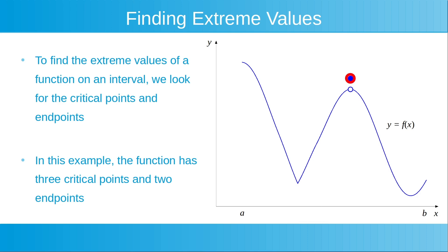The second critical point is now shown highlighted in red. At this point, the derivative of the function is also undefined — the derivative of the function is undefined at points of discontinuity. On the open interval, now highlighted with a red line, this critical point is a local maximum value.